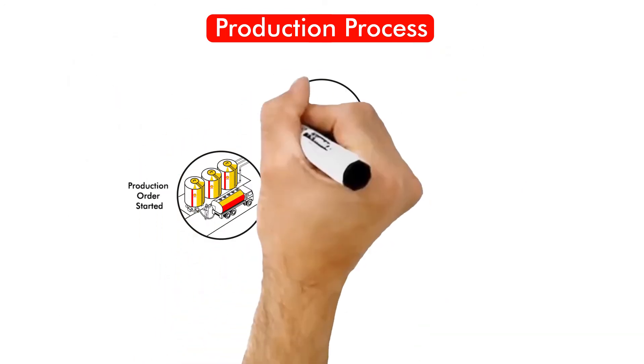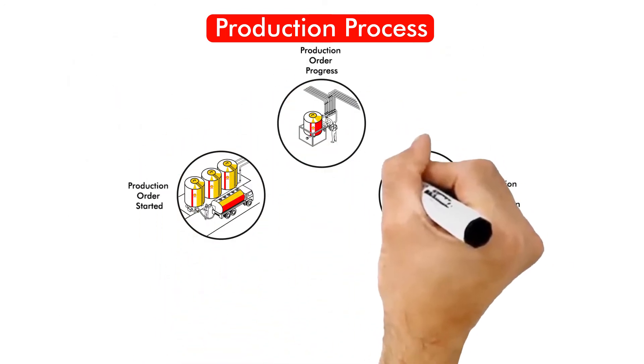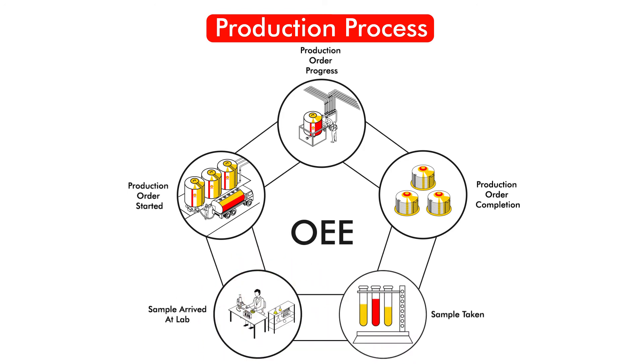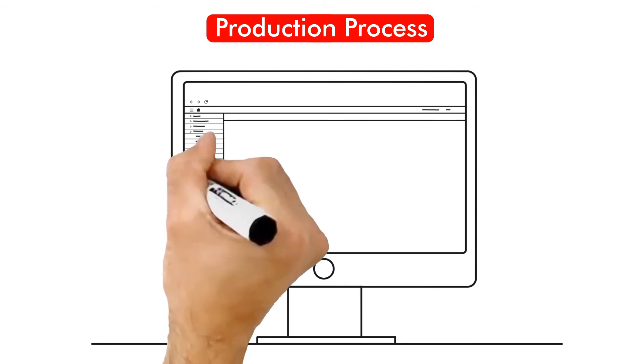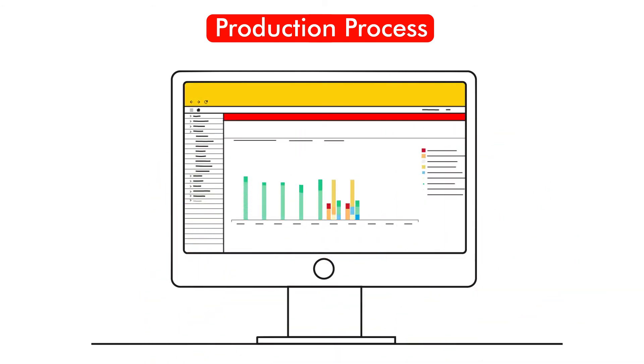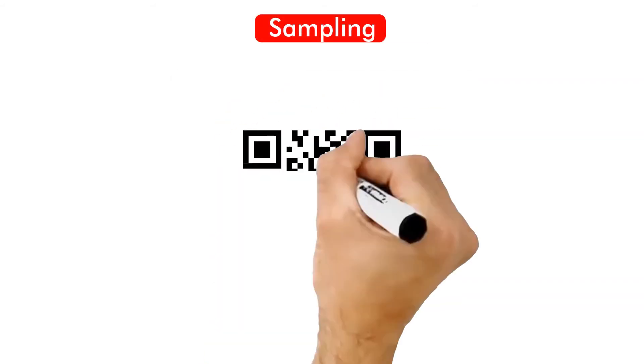MES's overall equipment effectiveness feature will be the gold standard for measuring blending productivity. By measuring OEE and the causes for production disruption, we gain important insights on how to apply continuous improvement to systematically reduce waste and improve flow.